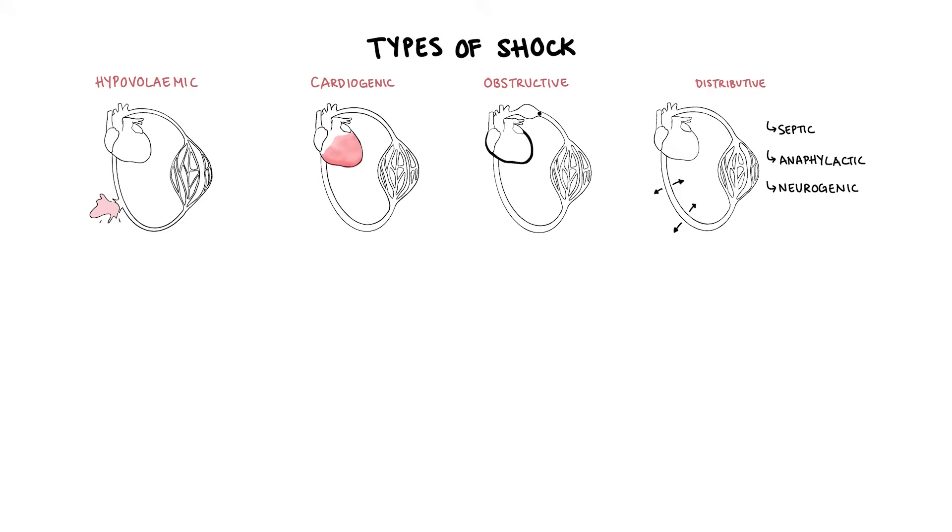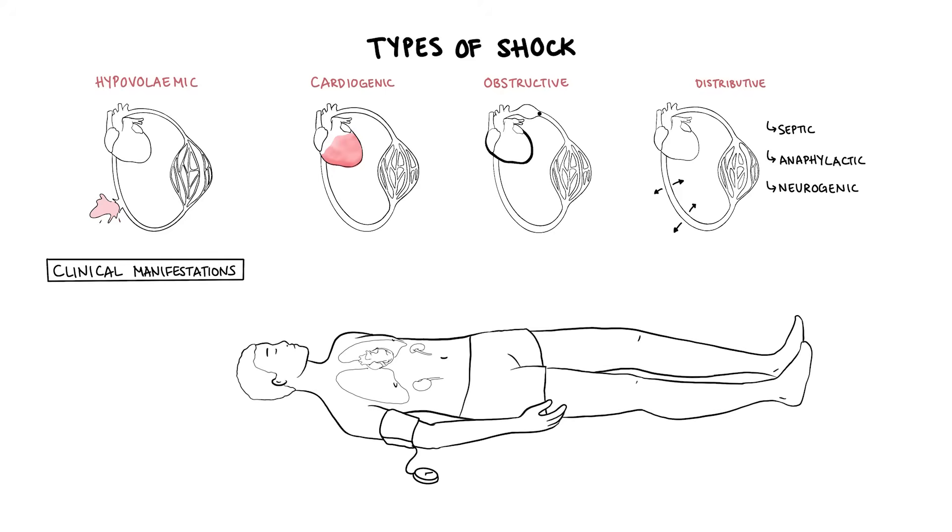Now these different types of shock usually have a similar clinical manifestation, which is hypotension, tachycardia, tachypnea, altered mental status, cold clammy extremities with mottling of the skin, and oliguria.